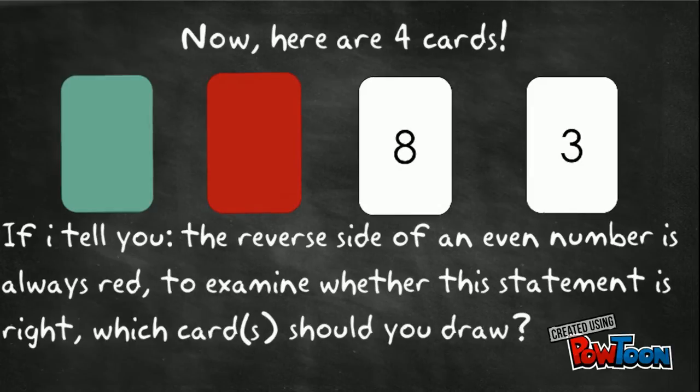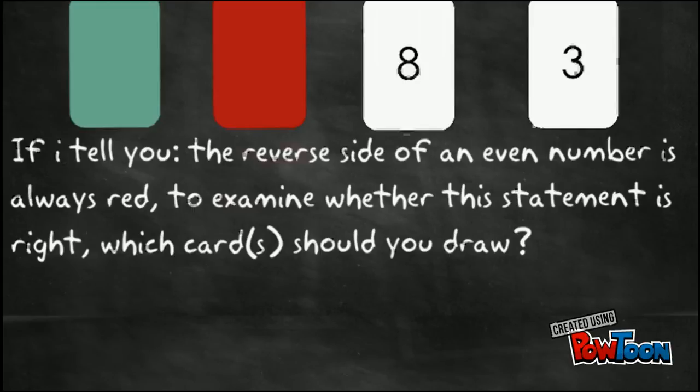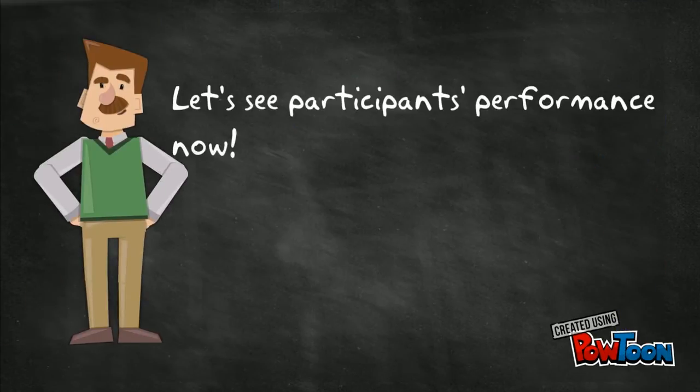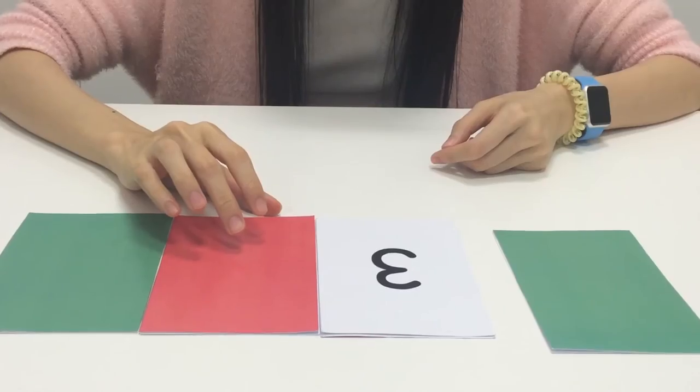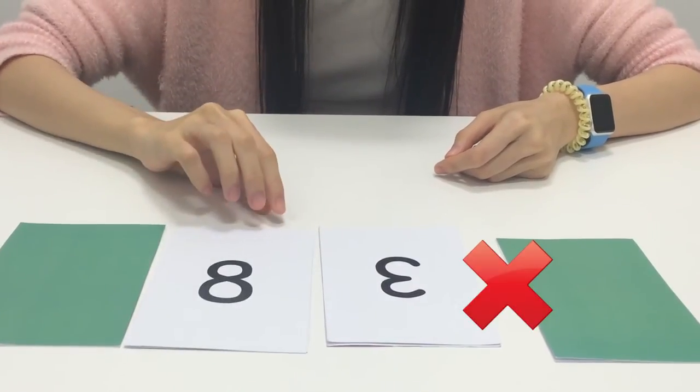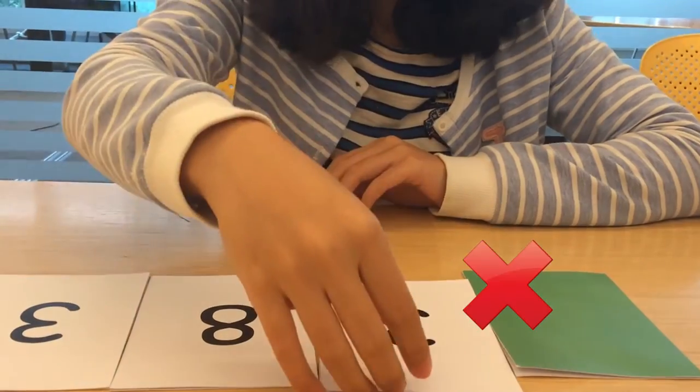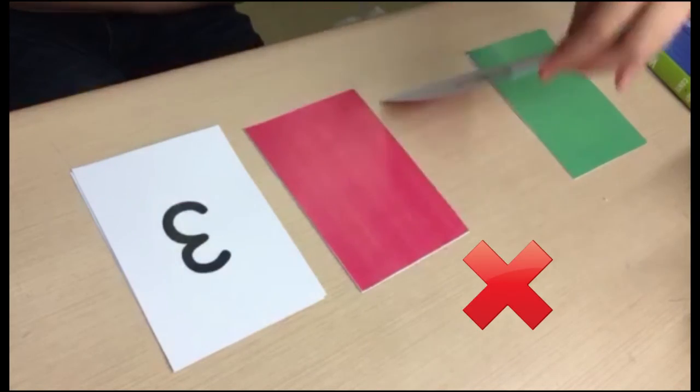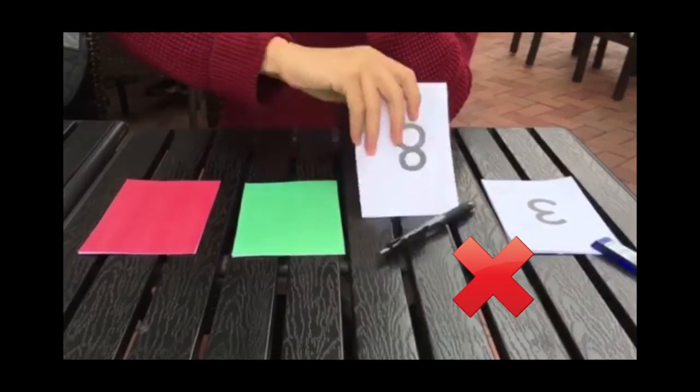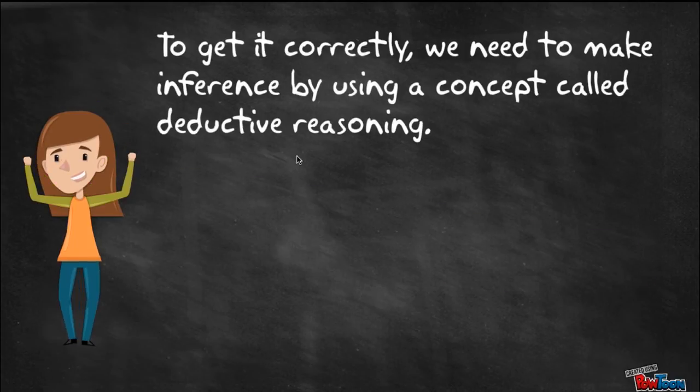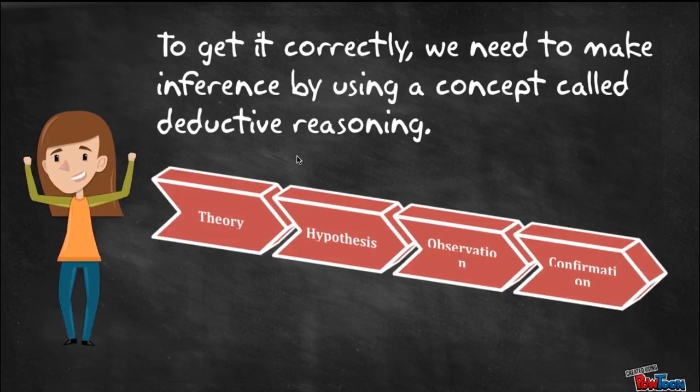I'll give you a few seconds to think through. Let's see our participants' performance first. So what's the correct answer? To get it right, we need to make inference by deductive reasoning to reach a logical conclusion.